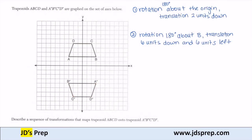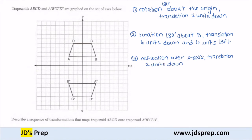And then another one that you can do is a reflection over the x-axis, a translation two units down, and then a reflection over the y-axis. So let's see what that one would look like. Let's say I take all these points and I reflect them over the x-axis first.